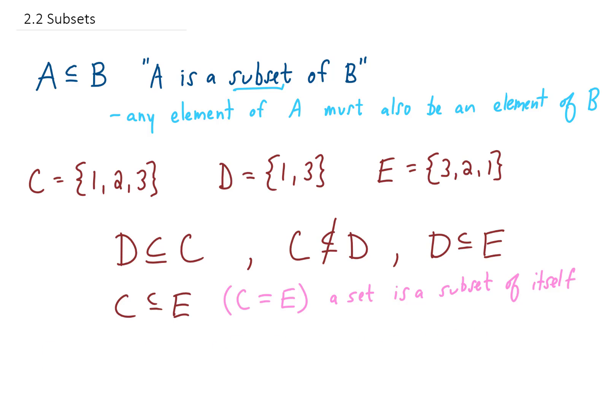Let me just give you a couple more examples. Is the set that includes shoes, pants, and shorts a subset of the set that includes skirts, shorts, and shirts? So the question is, is every element of this set also included in this set? The answer is no, because this set has the element pants, which is not included in this set. So to make this a true statement, we're going to put a line through here, and maybe one more example.